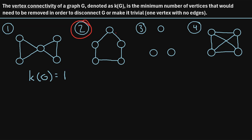Now let's take a look at example number two. Here we have another graph with five total vertices, and we can see that this is a cycle graph — a type of graph where the vertices are connected in a closed loop. So how many vertices would we need to remove to disconnect this graph or make it trivial? Let's pick one vertex and remove it.